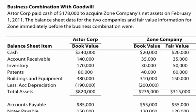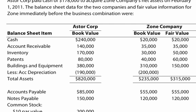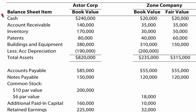In this video we're going to go over how to do a business combination with goodwill and how to calculate that. The problem reads: Aster Corp paid cash of $178,000 to acquire Zone Company's net assets on February 1, 2011. The balance sheet data for the two companies and fair value information for Zone immediately before the business combination were as follows. You can see their numbers here, and we'll come back to this as we start the problem.